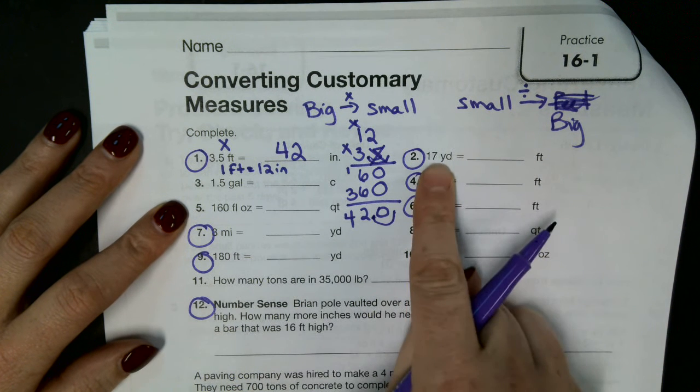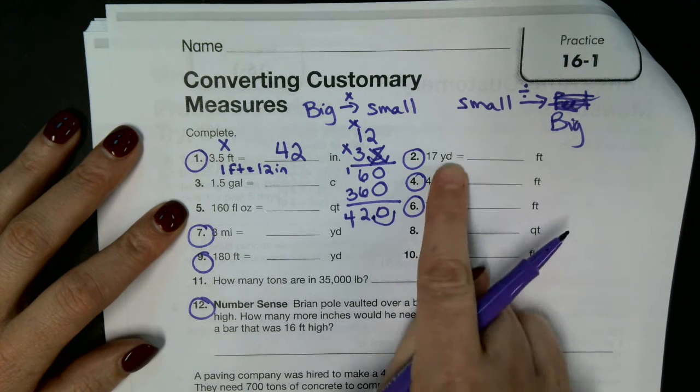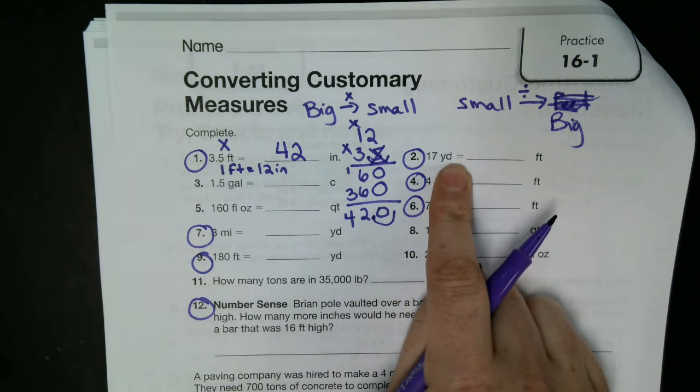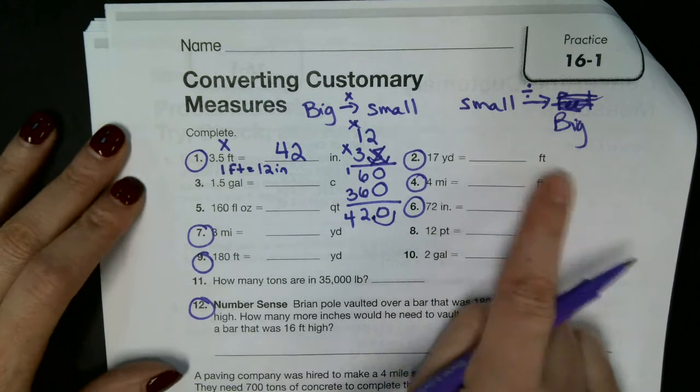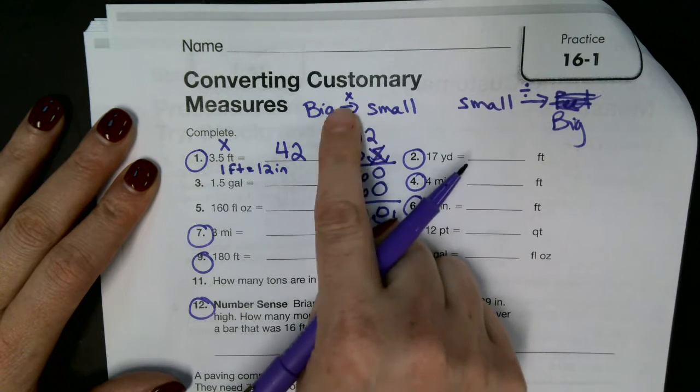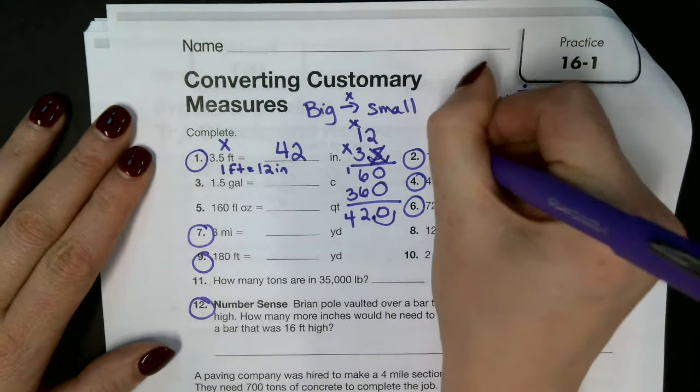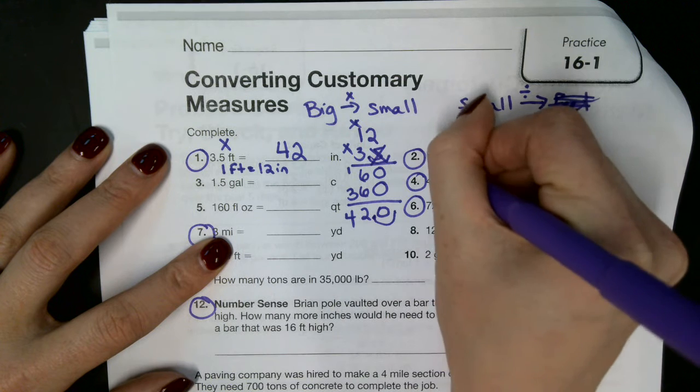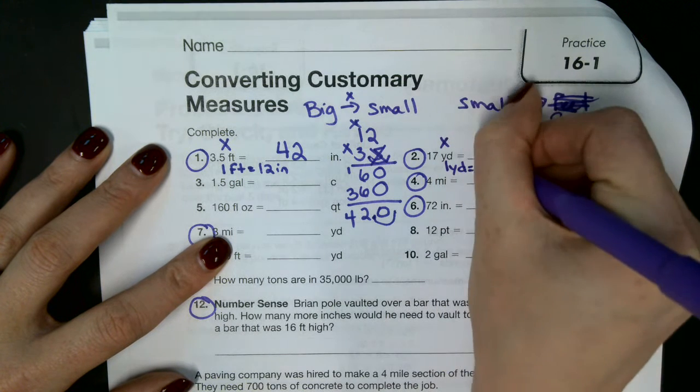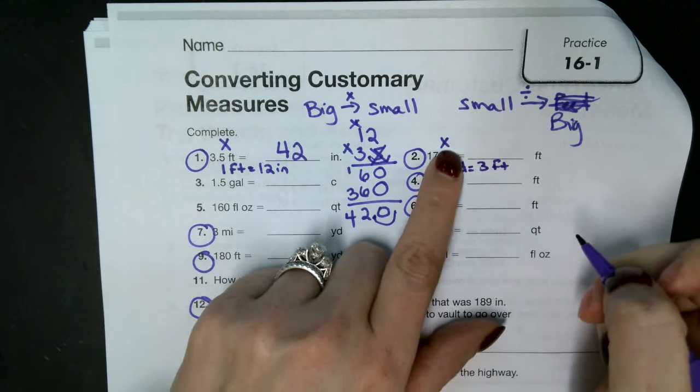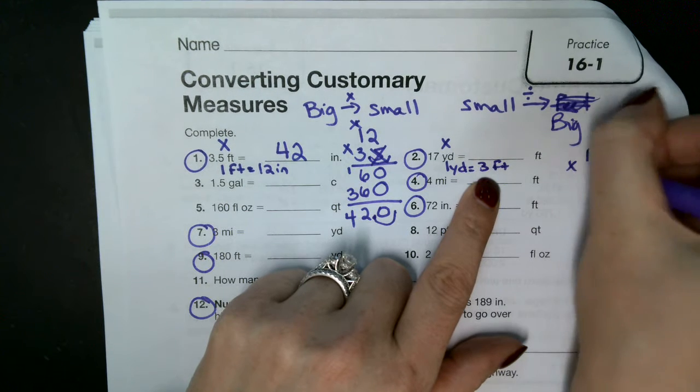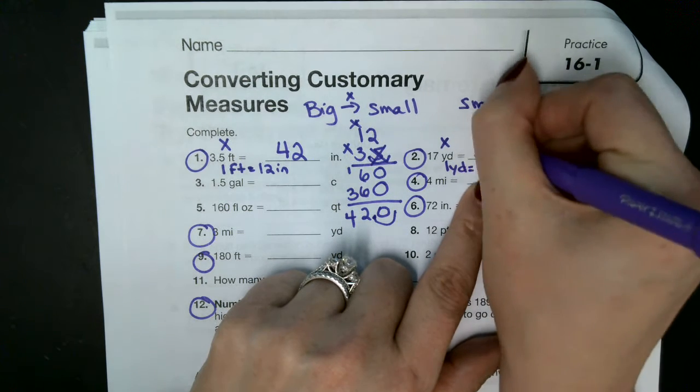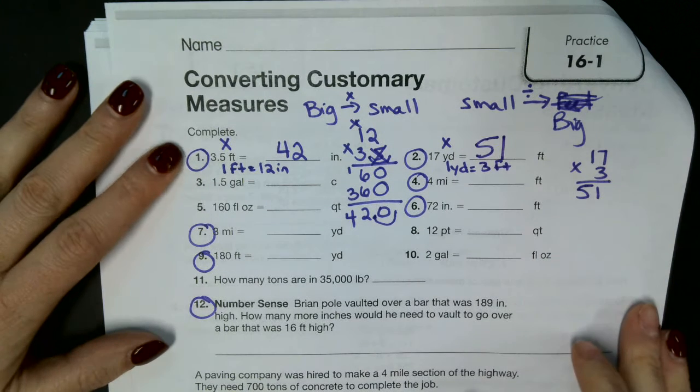Next one. Number two. 17 yards, converting it to feet. So we're going yards to feet. Which one is the bigger one? Yards. Yards is bigger. Feet is smaller. So big to small. If we're going big to small, then we multiply. Awesome. What do we know about yards and feet? There's three feet in a yard. That's right. So it's 17 times three. So we're going to take that 17, multiply it by three. And you get 51 feet.